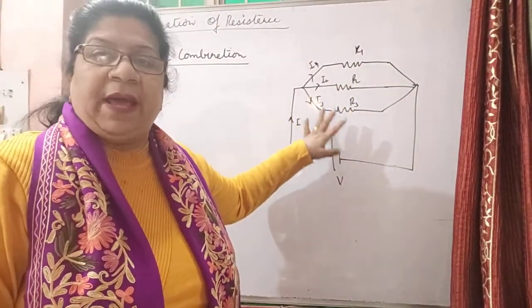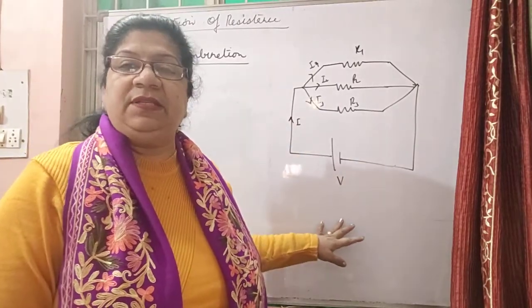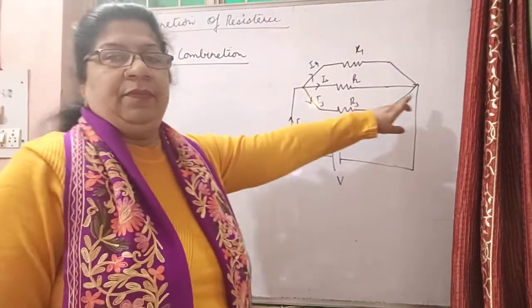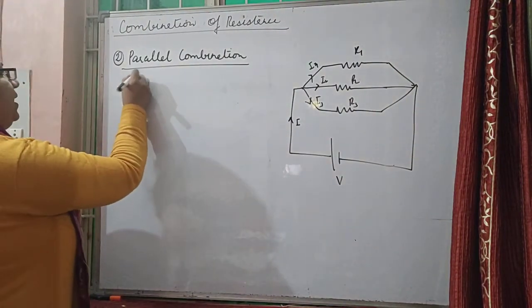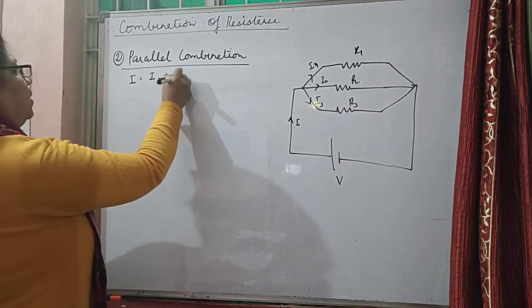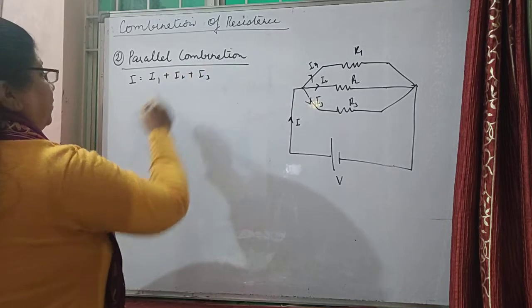i1, i2, i3 in a parallel combination. But the potential remains the same through the points in the parallel combination. Here we see that i is equal to i1 plus i2 plus i3.